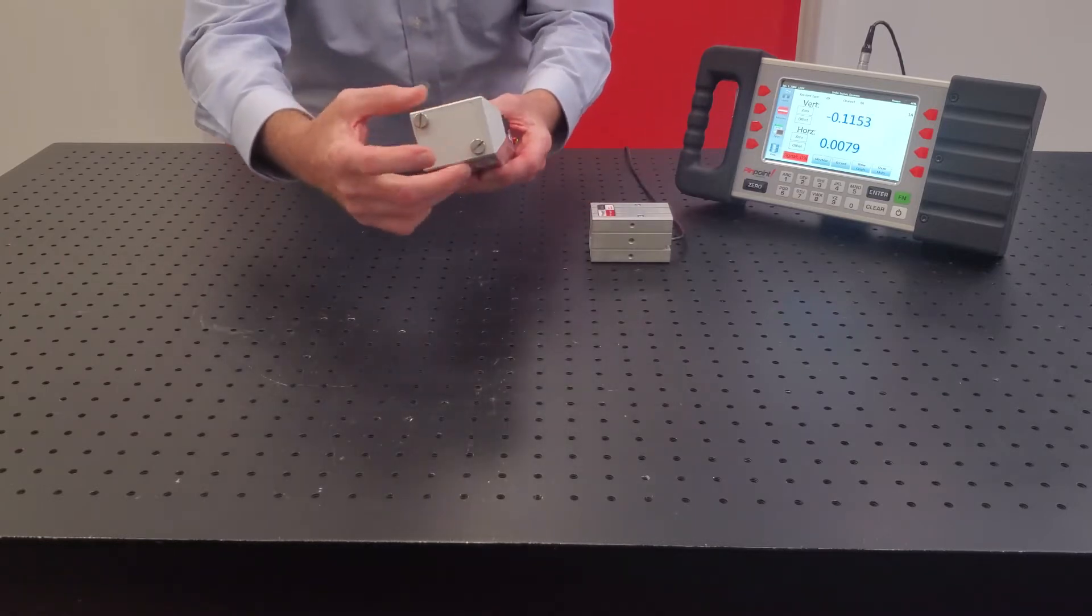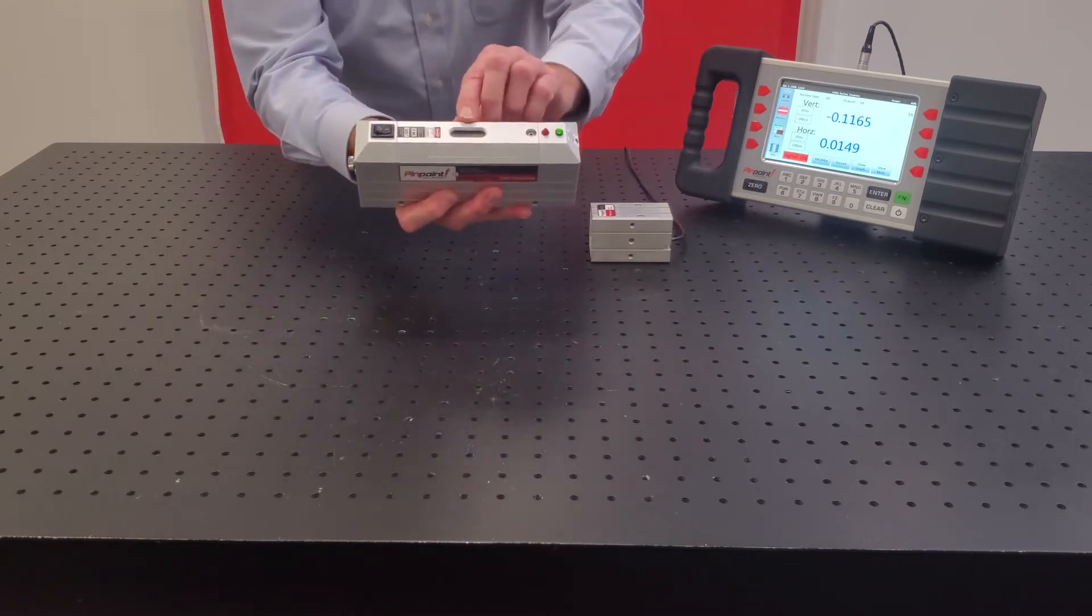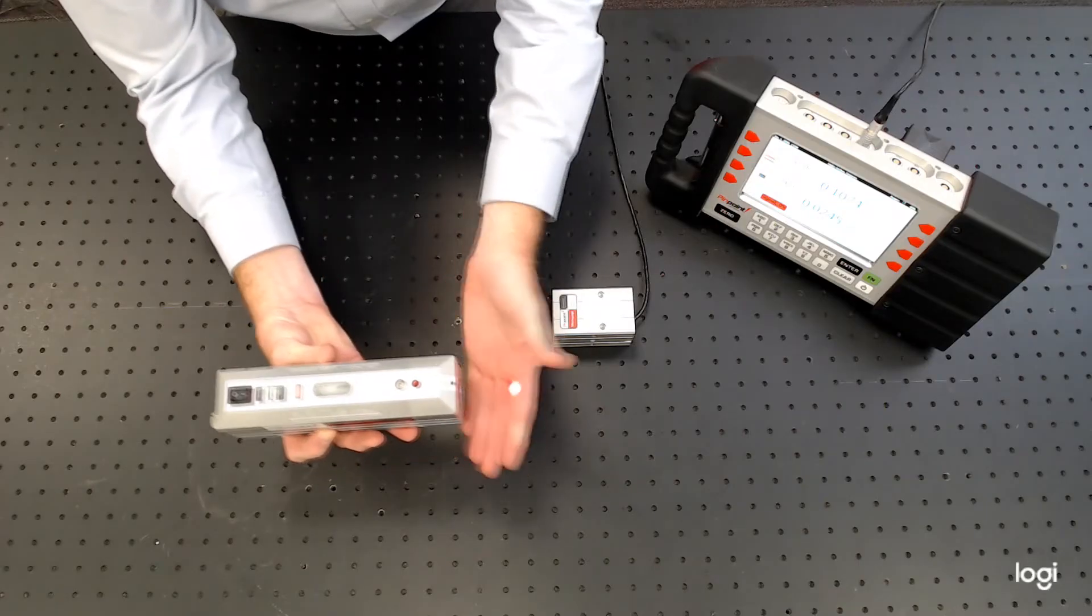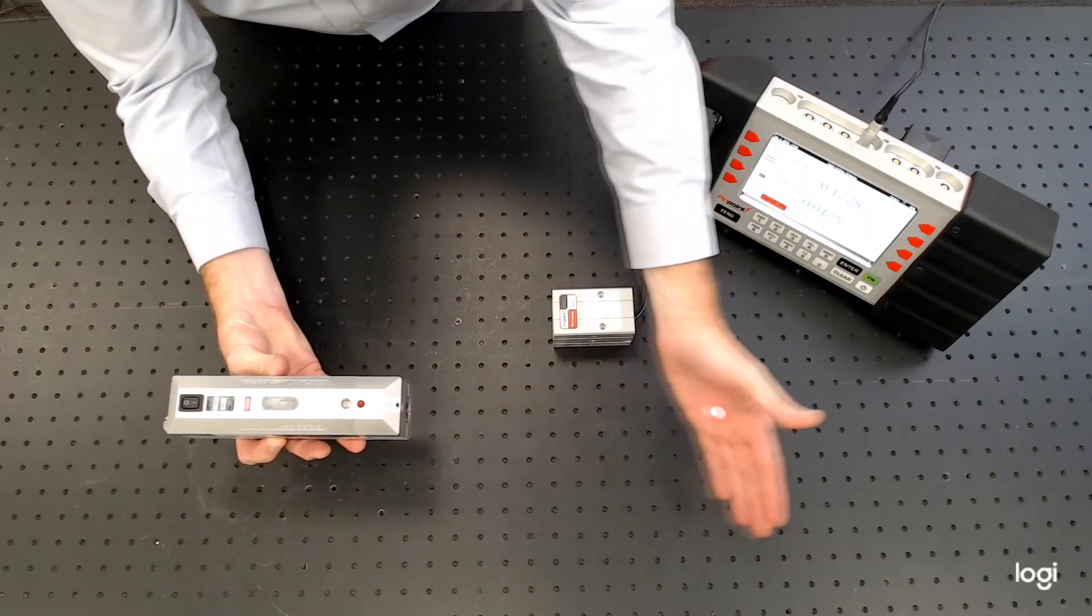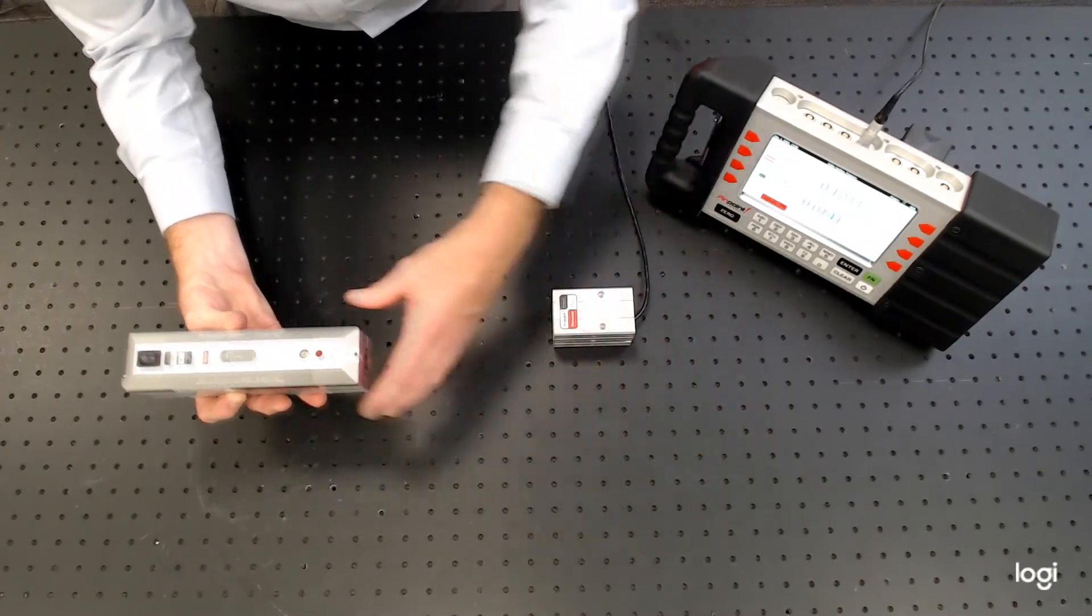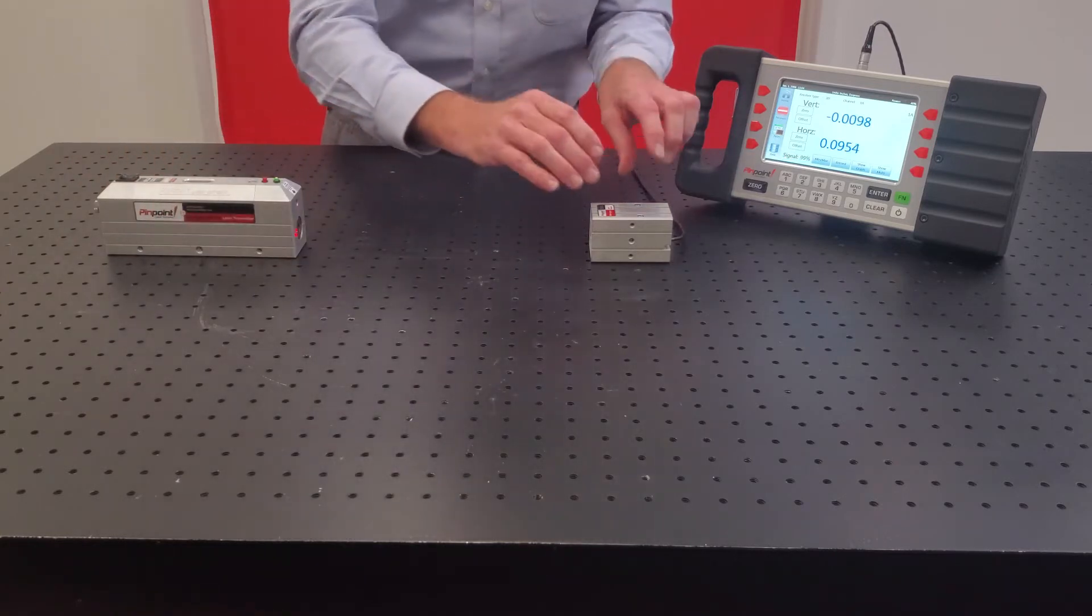The laser transmitter operates on four AA batteries, and there is a precision 10 arc second bubble level here so that you can level this laser if you need to. Out the end of the laser is a reference beam which will operate out to 120 feet and is parallel to the sides and the edges of the laser transmitter housing.